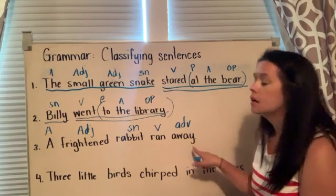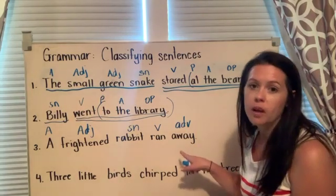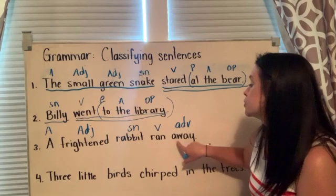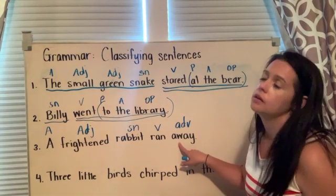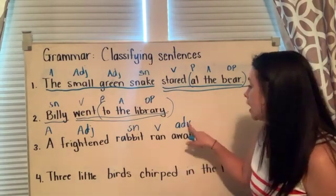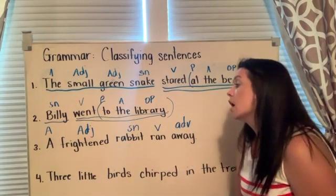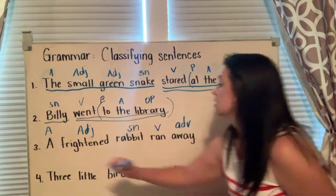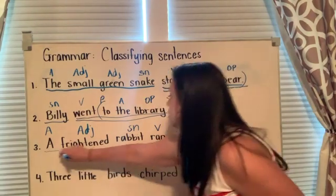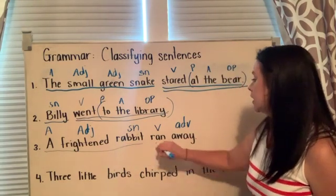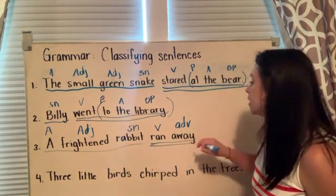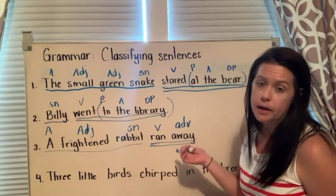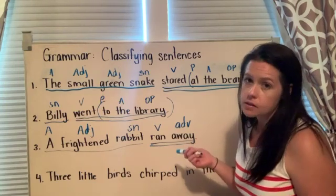Mrs. Williamson made a mistake — hey, guess what? We all make mistakes. The question after the verb should have been: ran where? Away. Adverb. The complete subject is: a frightened rabbit. Complete predicate: ran away. Now, if you notice, there's no prepositional phrase in this sentence, but not every sentence has one.